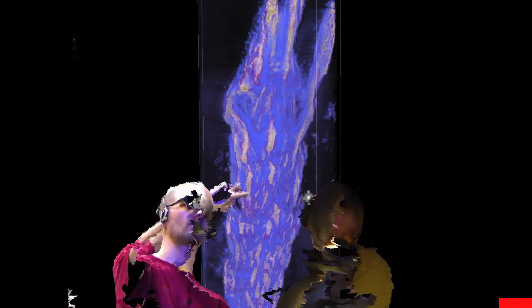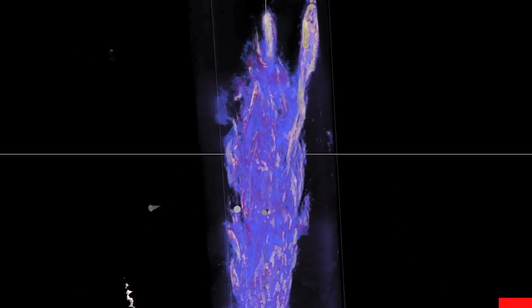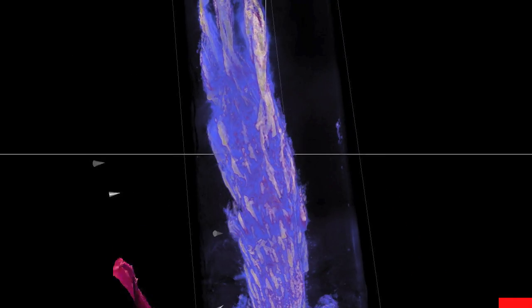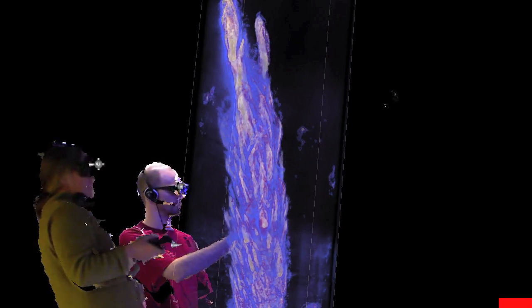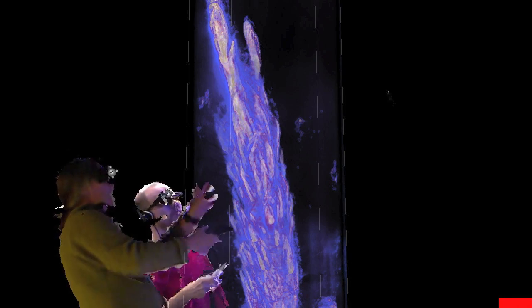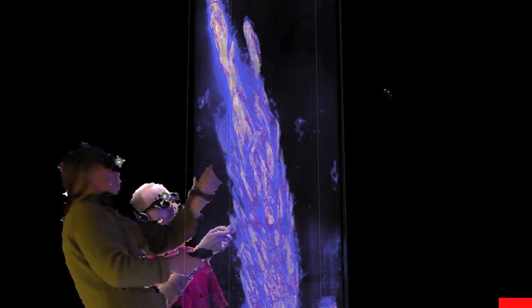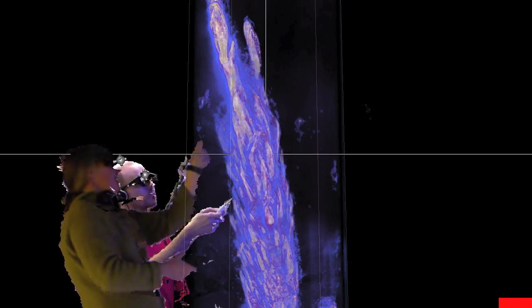So this here, that's essentially the skeleton of the structure that we are seeing, these white parts. Yeah. And so one of the things we're really interested in is how the different shapes that you see, for example these long thin areas, reflect the microbial growth processes.